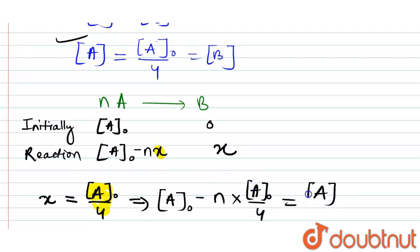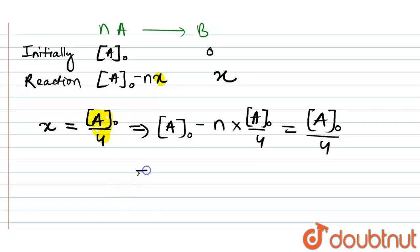So when we will calculate by taking common A naught here, we will get 1 minus n by 4 equals A naught by 4.